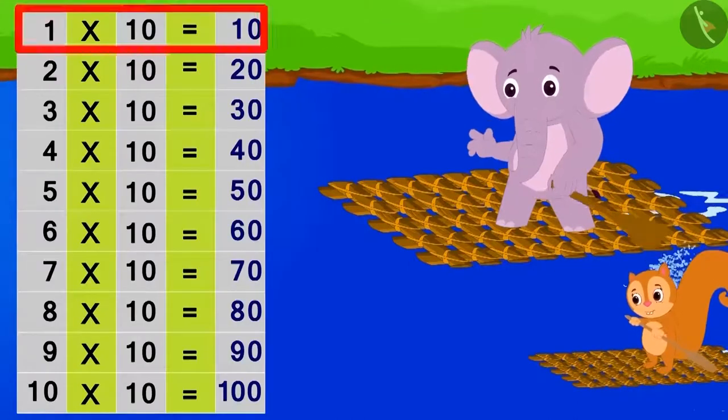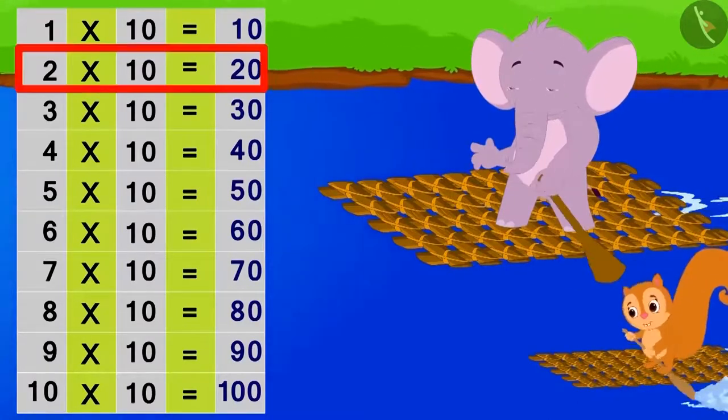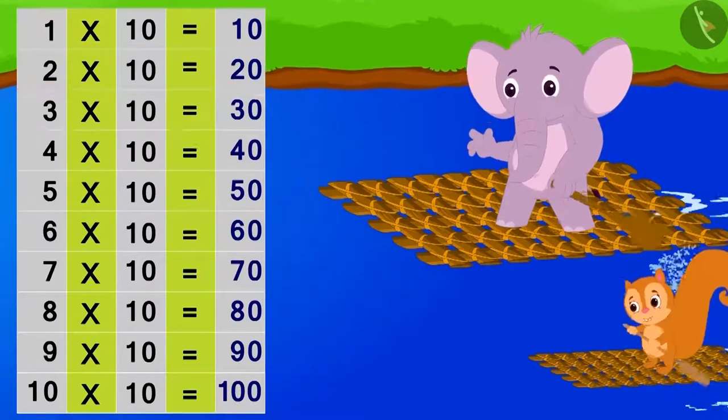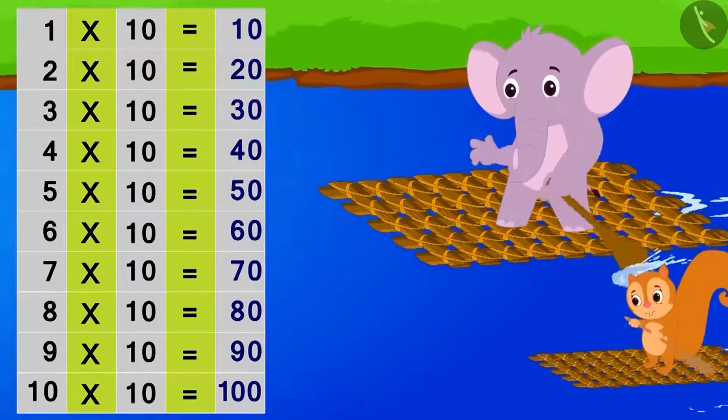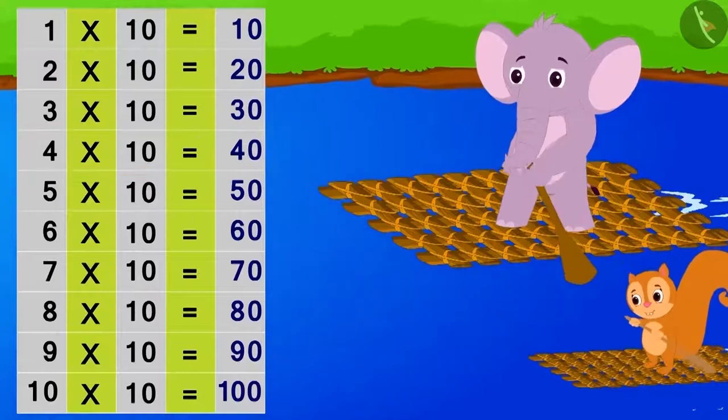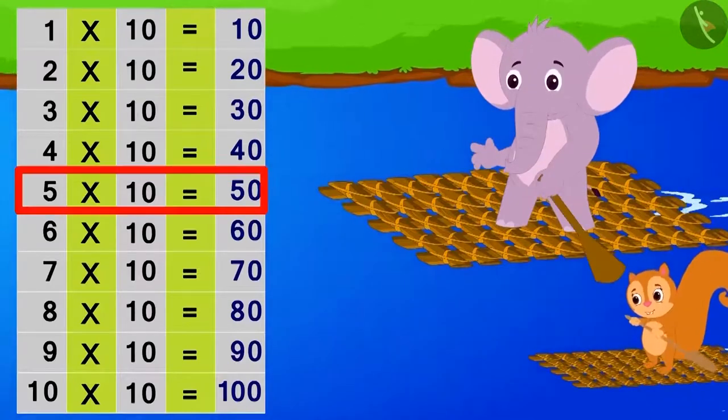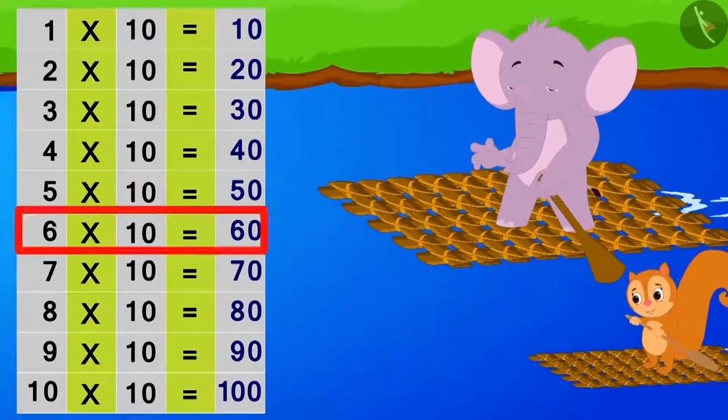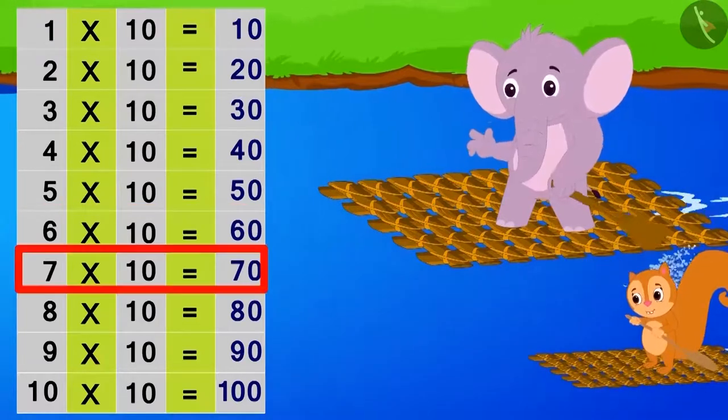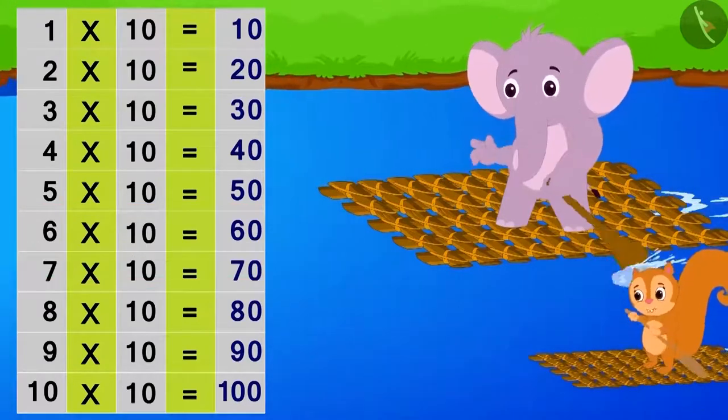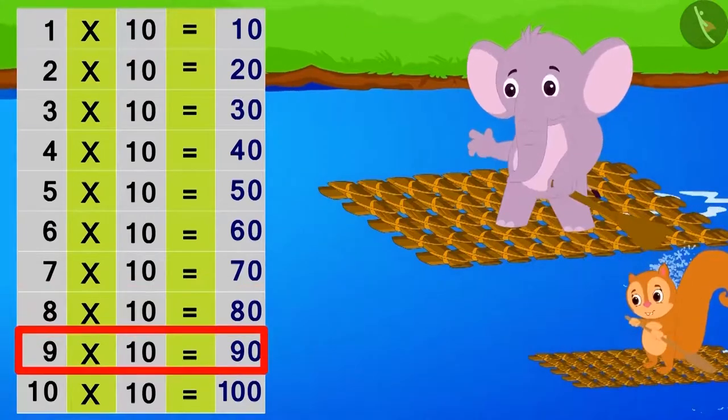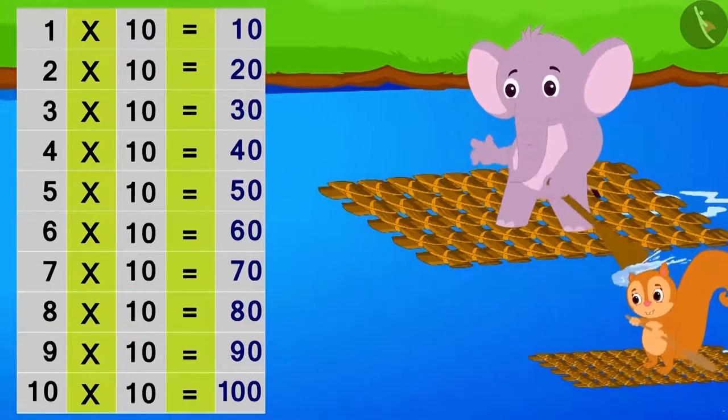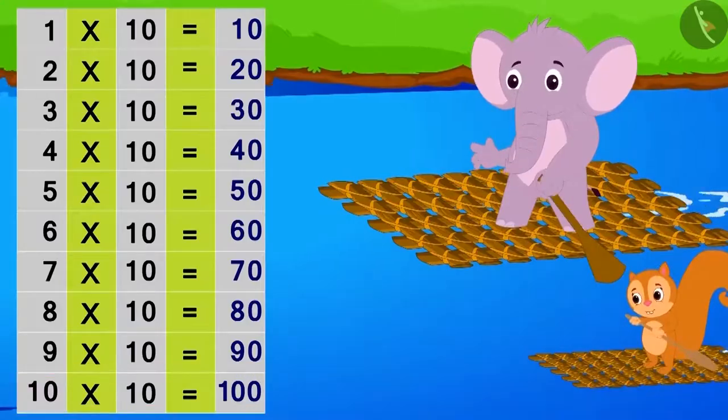10 ones are 10, 10 twos are 20, 10 threes are 30, 10 fours are 40, 10 fives are 50, 10 sixes are 60, 10 sevens are 70, 10 eights are 80, 10 nines are 90, 10 tens are 100.